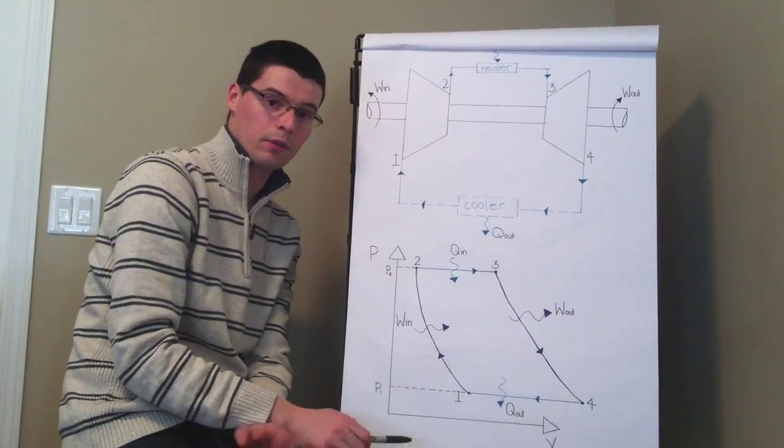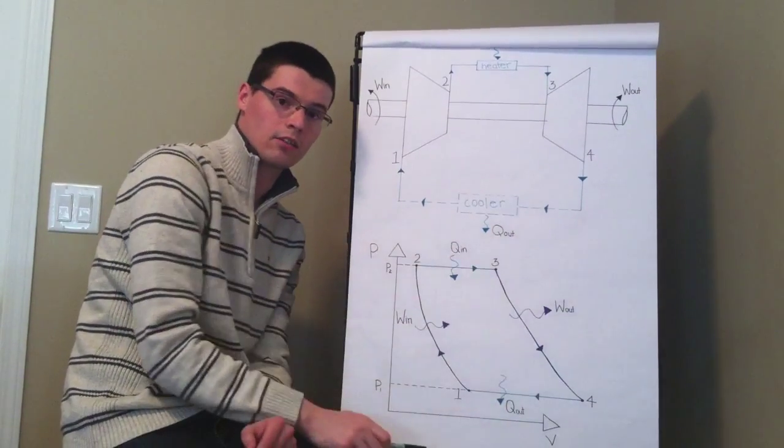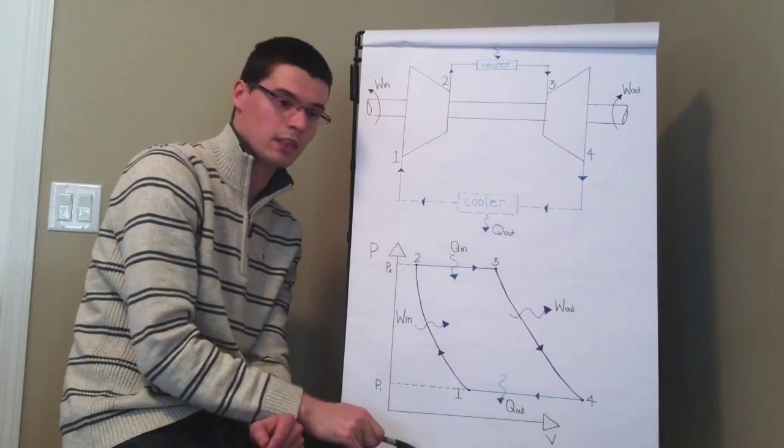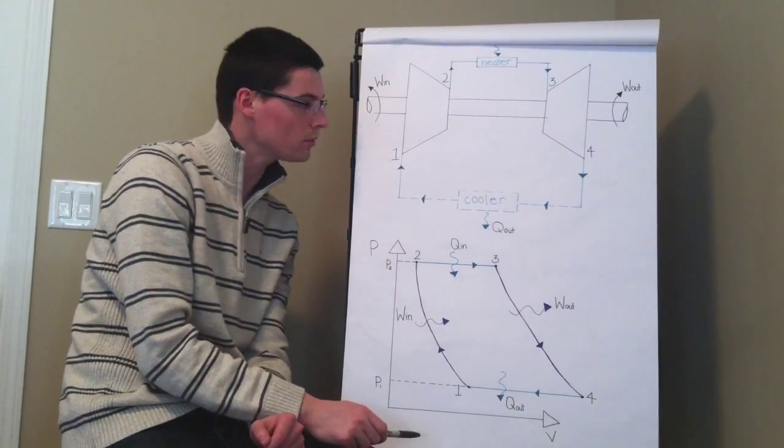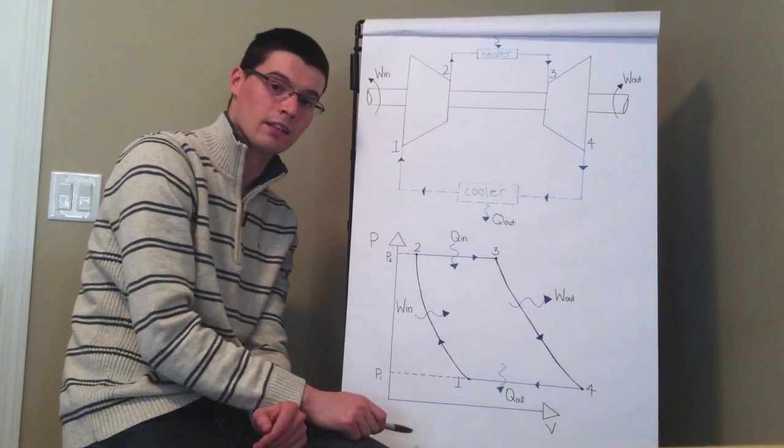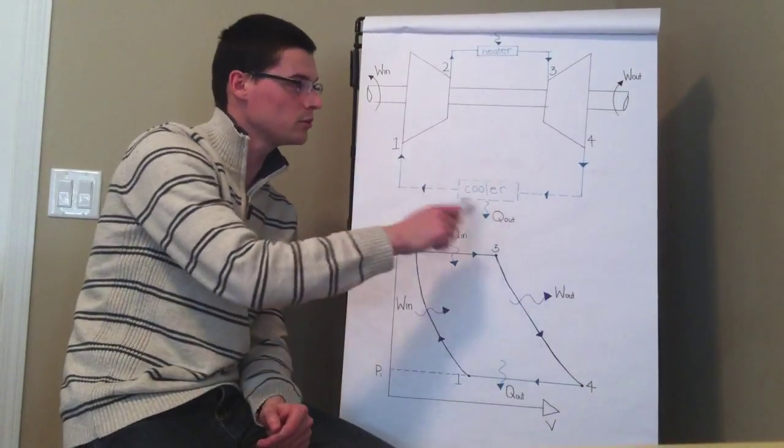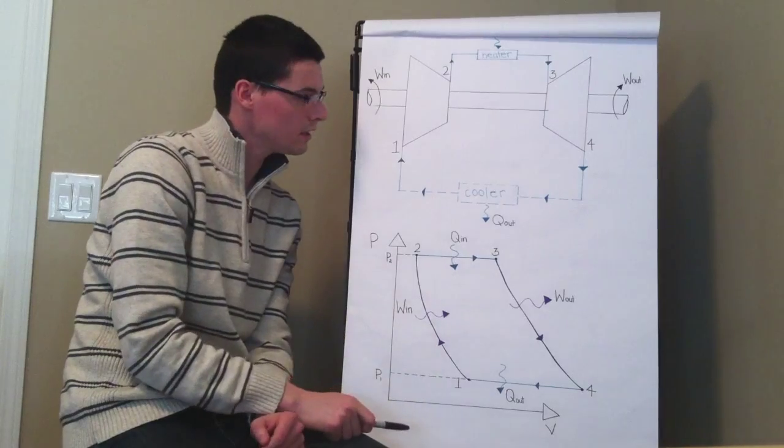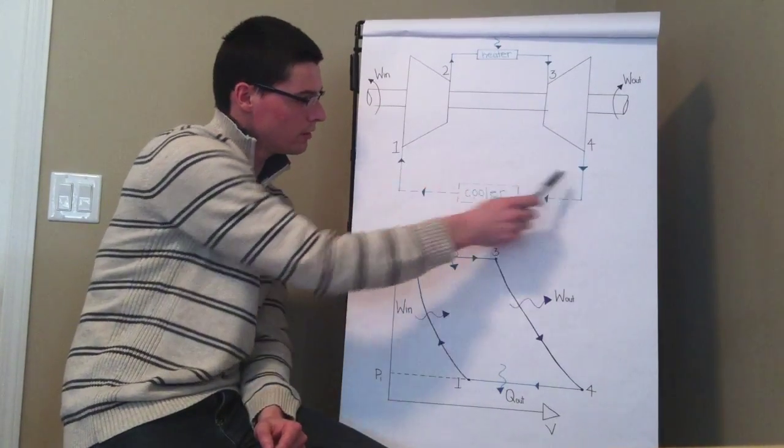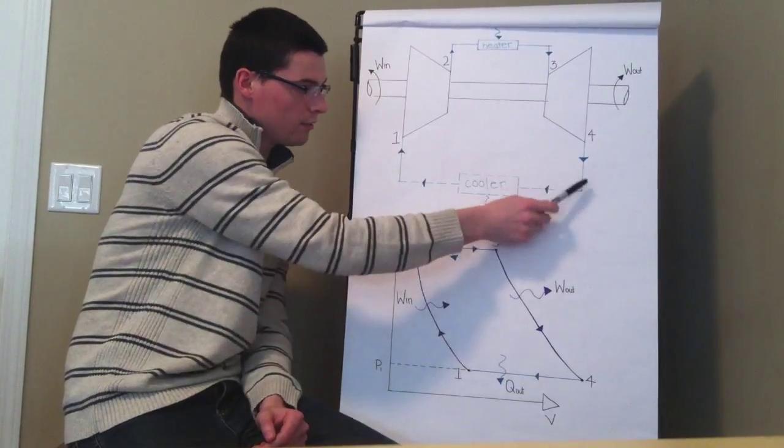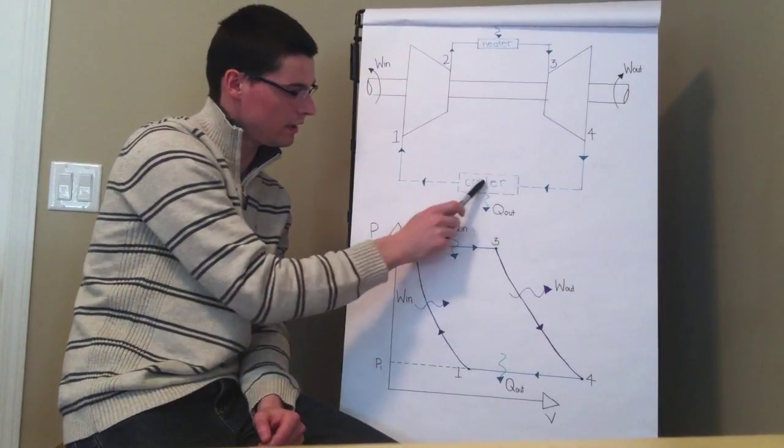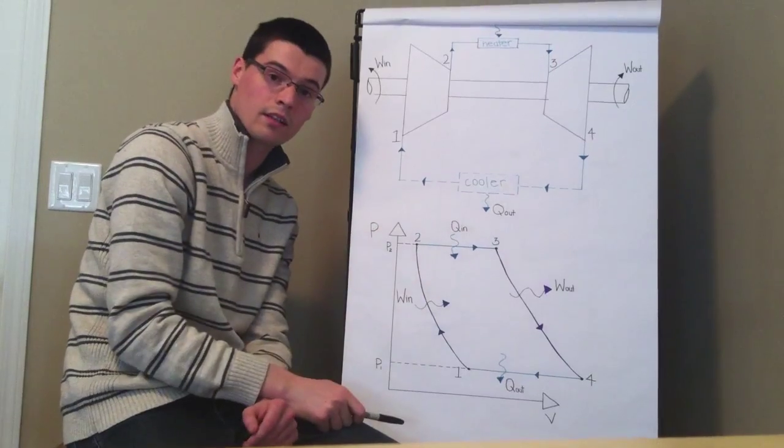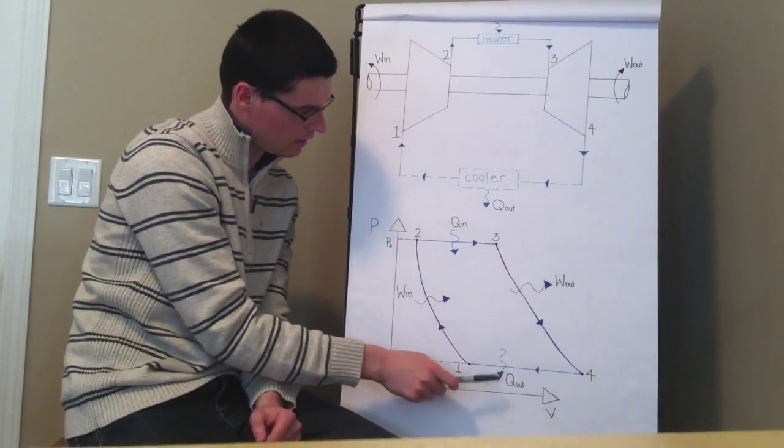Now in a jet engine, it would be an open air cycle. The exhaust gases would just be jetted out into the open atmosphere. But for this example, we are going to treat it as an ideal Brayton cycle. So we will assume that it is closed. And so from four to one, the hot gases are going to have to go through a cooler to come back and we are going to get heat out.